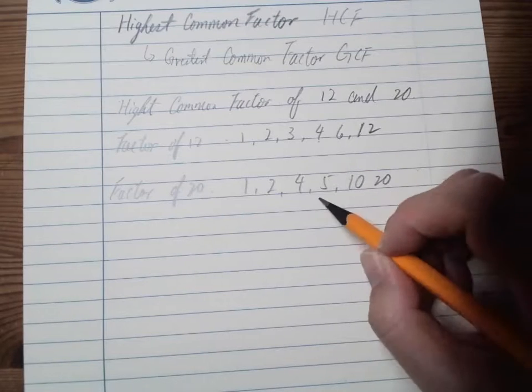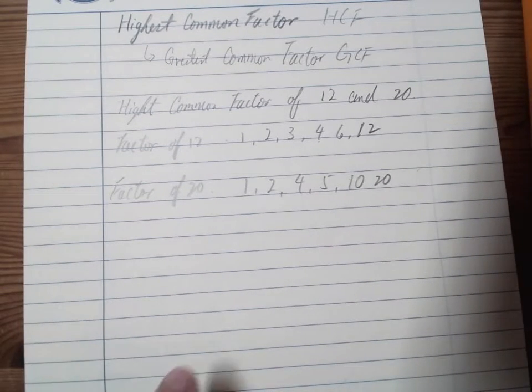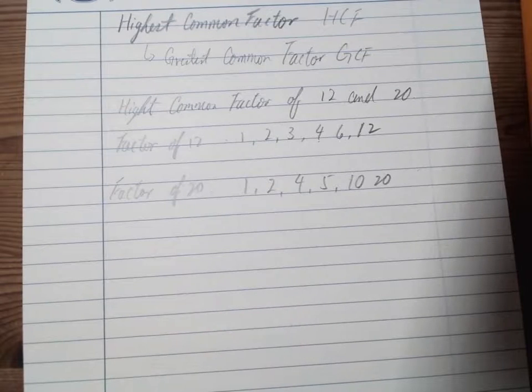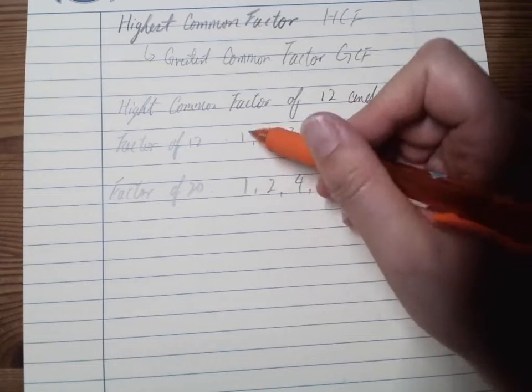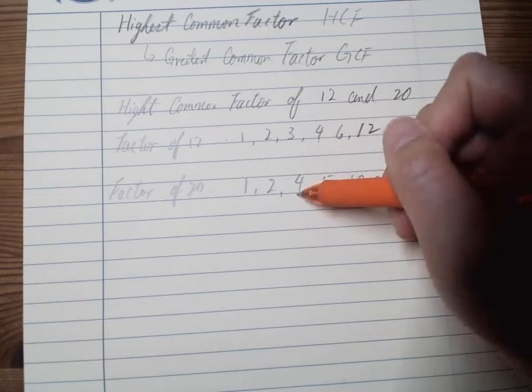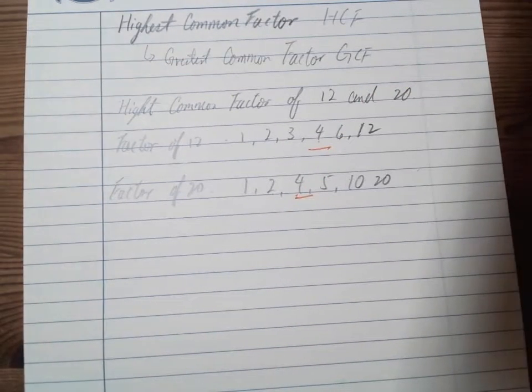So now we look for the highest one. The common factor is the one that is the same, which we have gone through before. Now we look for the biggest one. So checking from 1 is the same, 2 is the same, 4 is the same. Anymore? No. So 4 is our highest common factor.